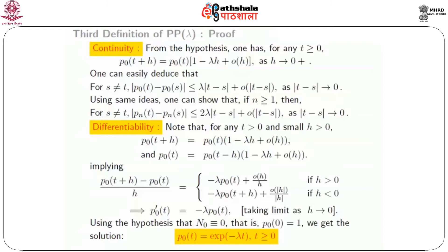This is an easy differential equation. To find the unique solution we also need an initial condition, which comes from the hypothesis that N(0) = 0, implying p_0(0) = 1. Using that initial condition and this differential equation, we get the unique solution p_0(t) = e^{-lambda*t} for all t ≥ 0. We have obtained p_0(t) completely with no distributional assumptions — derived purely from the given conditions.